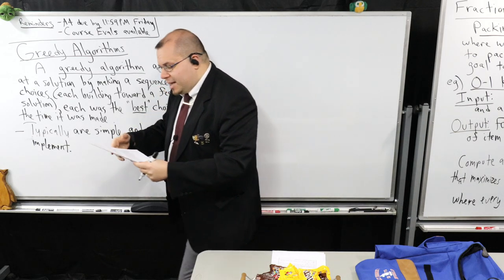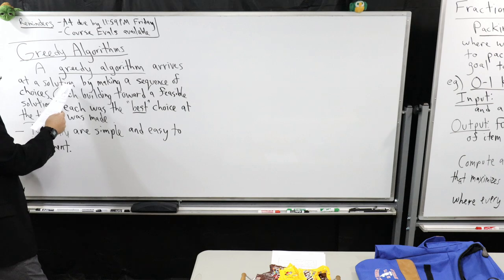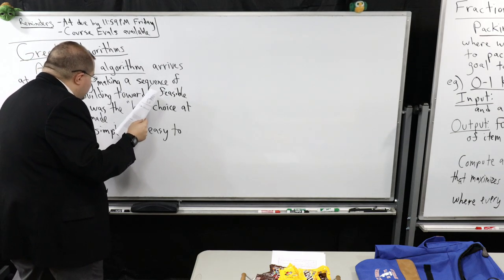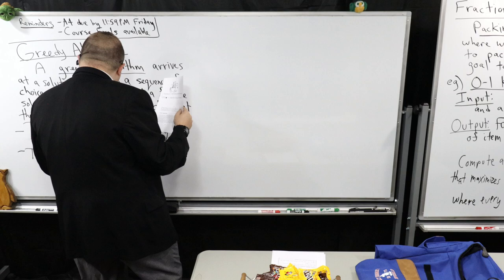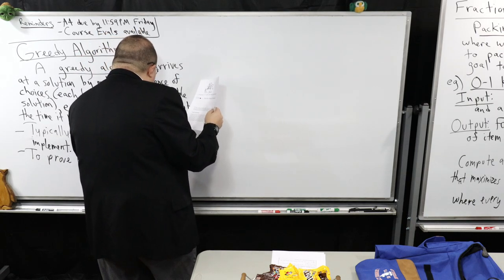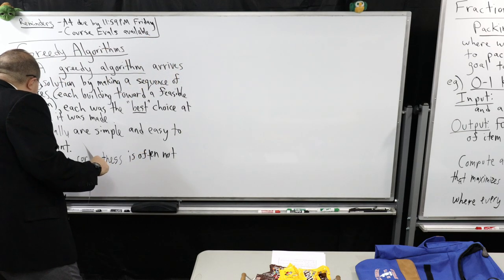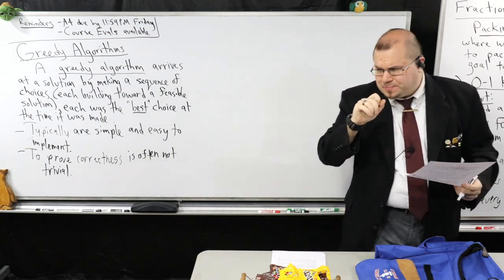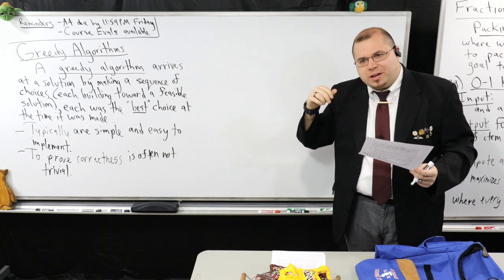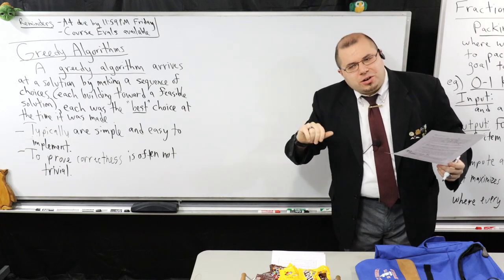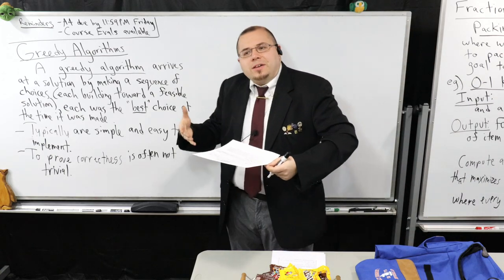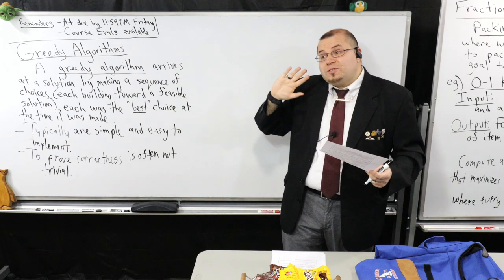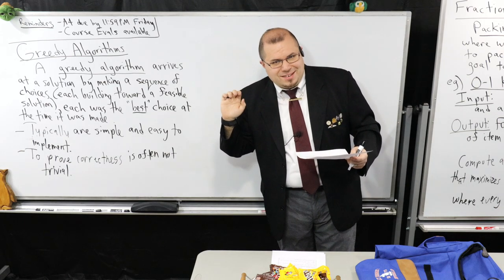Here's the catch: to prove correctness - meaning I'm always producing an optimal solution - it's often not trivial. It's typically a little tricky to do this. I'm hoping today I'll show you a way that you can. There's a standard argument type used for greedy algorithms called an exchange argument. I'll hopefully have time to show you this; if not, it's in the notes. In fact, in the previous notes we've actually seen an example of this.